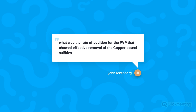John Levenberg asks about the PVI/PVP rate for removing copper-bound sulfides. It depends on the wine matrix, but we typically look at 20–50 g/hL. The AWRI trials were conducted at 50 g/hL, which is a significant addition. That rate would likely remove most copper-bound sulfides, though it depends on how much is present. We don't yet have a good bench trial method specifically for copper-bound sulfides, so that's something to keep in mind.